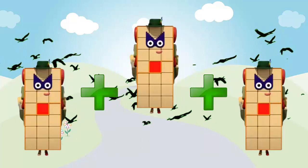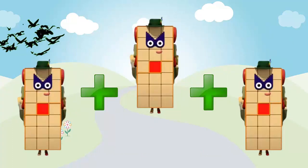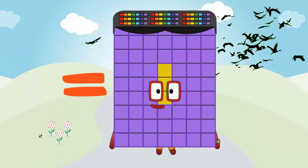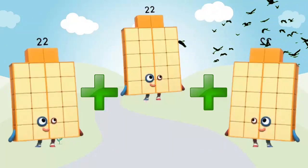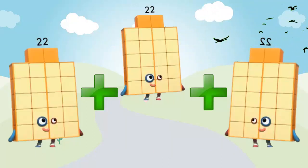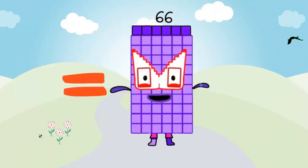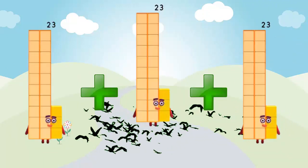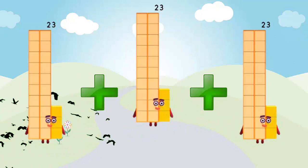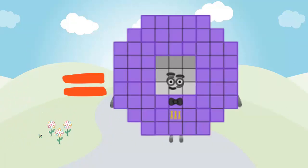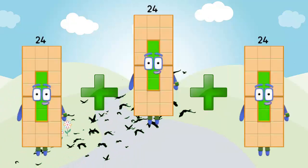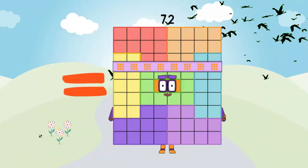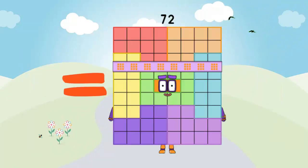21 plus 21 plus 21 equal 63. 22 plus 22 plus 22 plus 22 equal 66. 23 plus 23 plus 23 equal 66. 24 plus 24 plus 24 is equal 72.